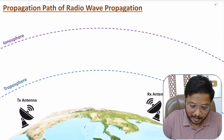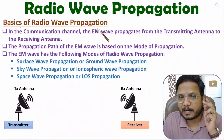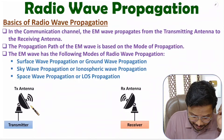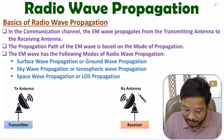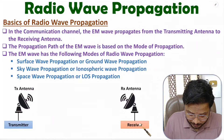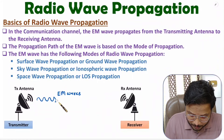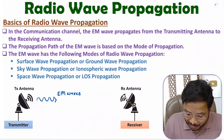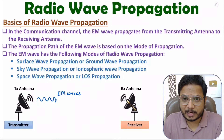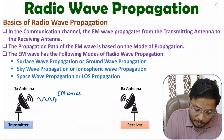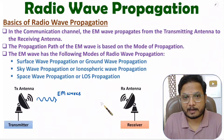Let us begin with the first agenda: basics of radio wave propagation. Radio wave propagation happens in free space, or you can say it happens in air. Here we have a transmitting antenna connected with a transmitter and a receiving antenna connected with a receiver. The transmitting antenna sends EM waves, which are radio waves, and these EM waves are received by the receiving antenna. So the communication channel is free space or air.